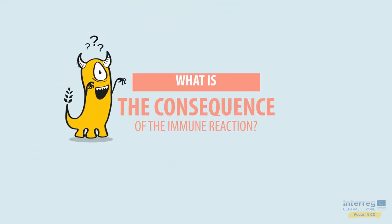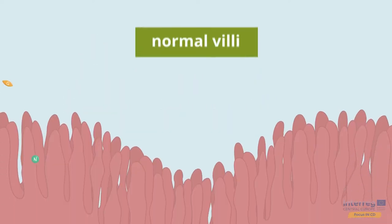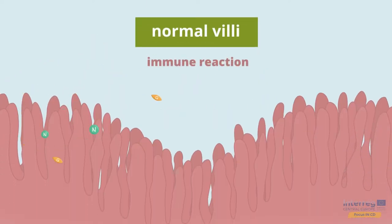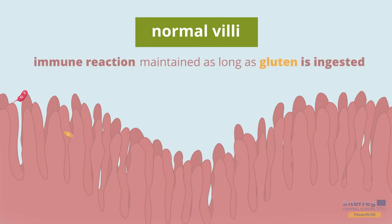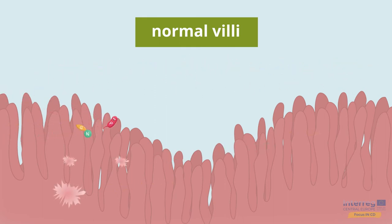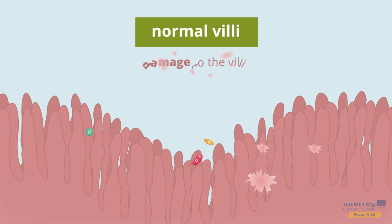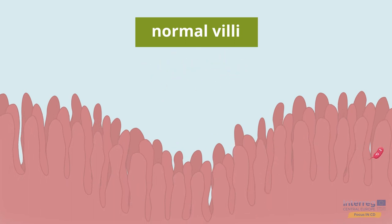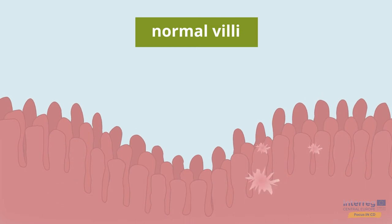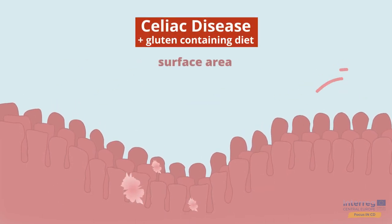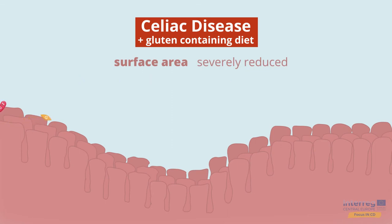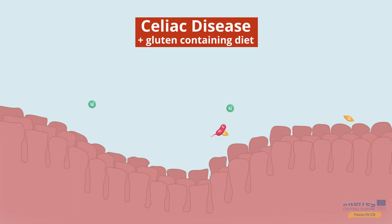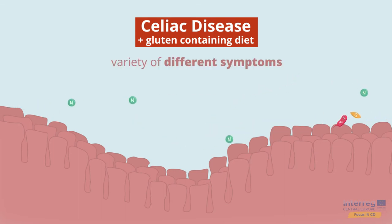What is the consequence of the immune reaction? The immune reaction against gluten and tissue transglutaminase will be maintained as long as gluten is ingested. The ongoing immune reaction causes more and more damage to the villi until they are destroyed and the intestinal mucosa becomes completely flat. Thus, the surface area for nutrient absorption is severely reduced. In combination with the ongoing immune reaction, this often leads to a variety of symptoms such as diarrhoea, abdominal pain, or nutrient deficiencies.